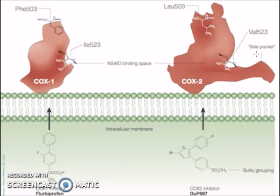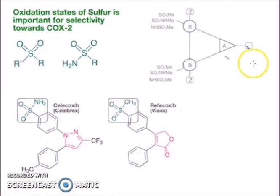So, in short, if the drug has a bulkier group or a large molecule, it will have a better fit with COX-2 enzyme compared to COX-1. Here we have the triangular framework for COX-2 drugs. If the drug does not have this triangular layout, it will actually lose its activity.